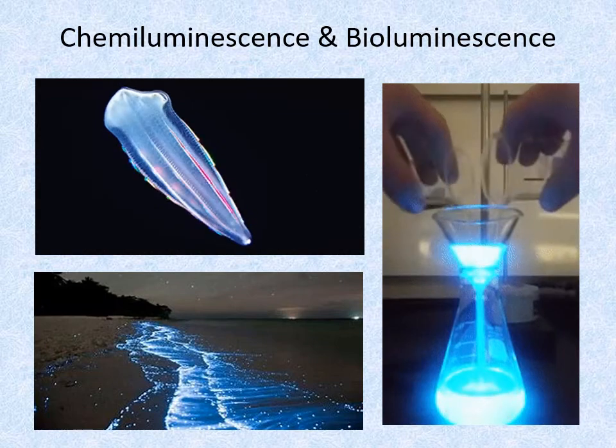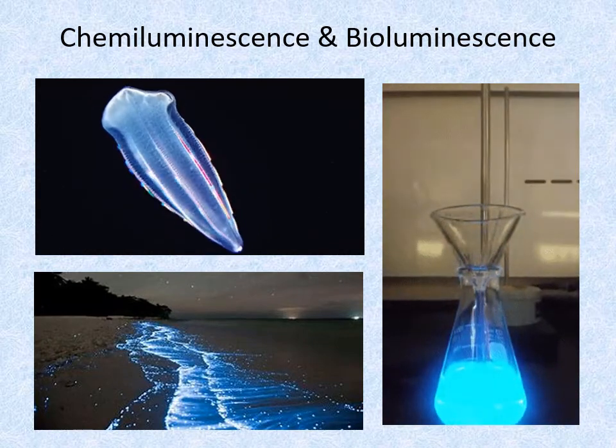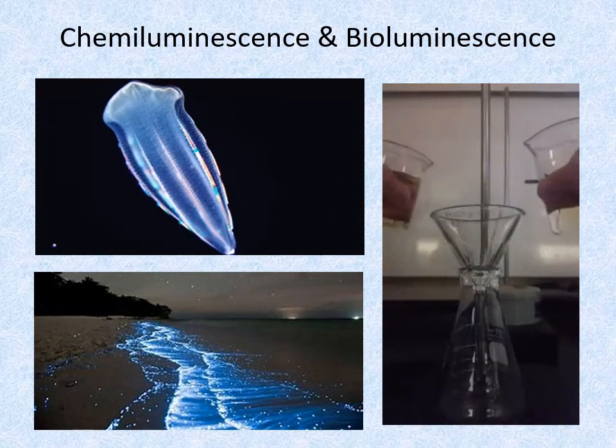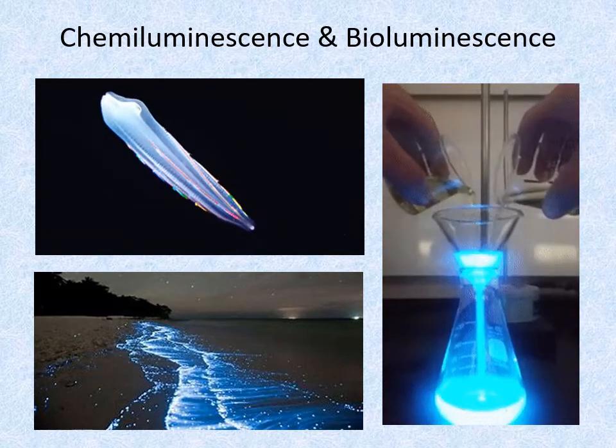So, if glowing light from an object disappears immediately when the illumination is switched off, it's fluorescence. If it lingers for a while, it's phosphorescence. And if it needs a chemical reaction, it's chemiluminescence. If a life form does it, it's bioluminescence.